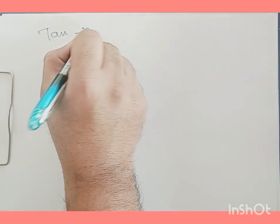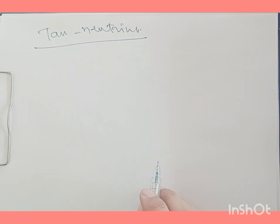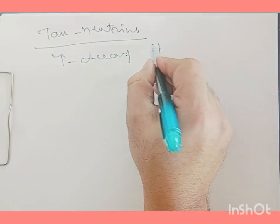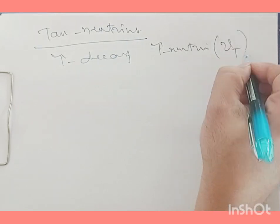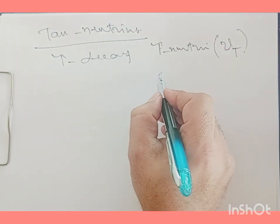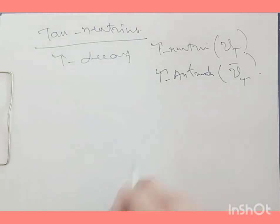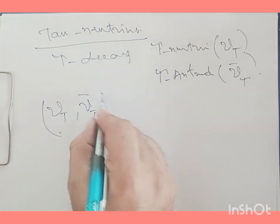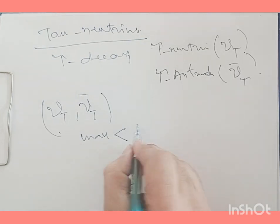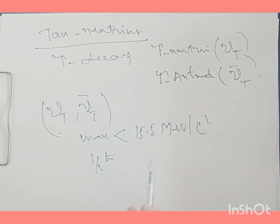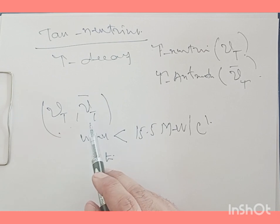Finally we have the tau neutrino (ν_τ). Tau neutrinos are produced in tau decay. The anti-particle is ν̄_τ. They are neutral particles; their mass is less than 15.5 MeV/c². They have a spin of 1/2 ħ. Both ν_τ and ν̄_τ are stable particles and do not decay to other elementary particles.